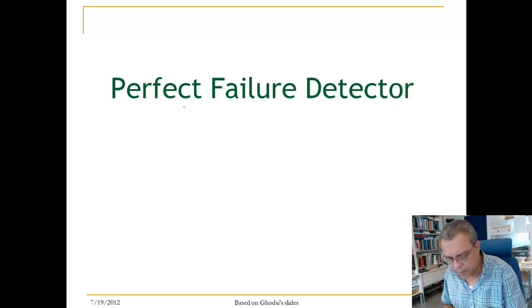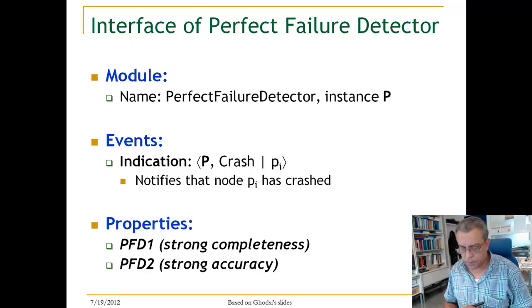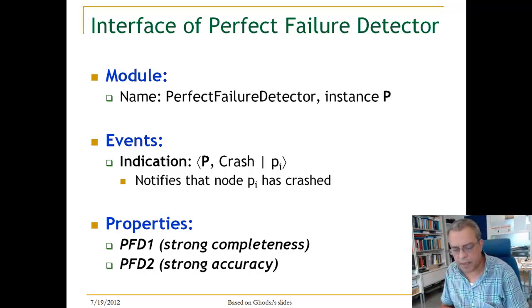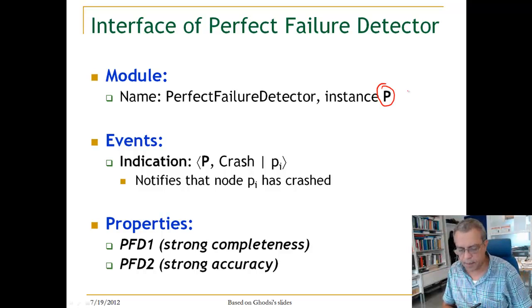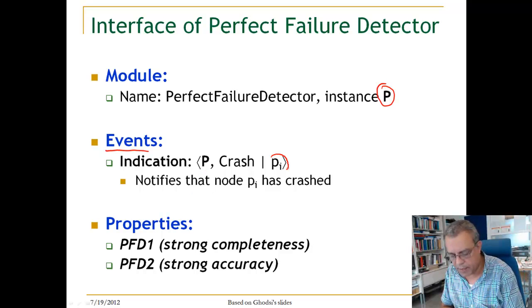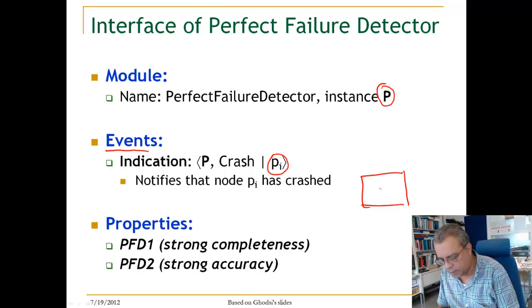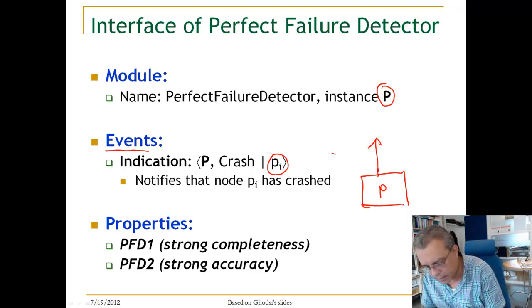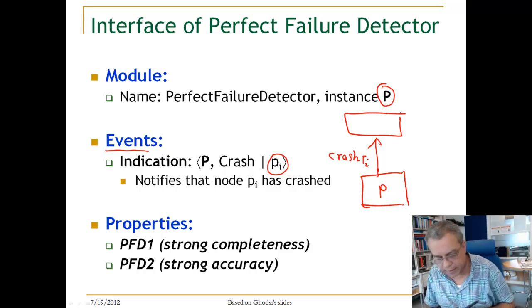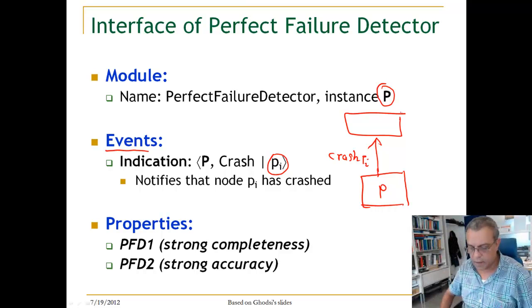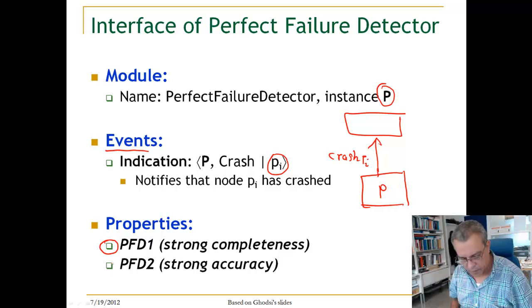We look at perfect failure detectors. The interface is instance P, which has only one event: whenever it detects that process PI has crashed, it outputs a crash event. This is our P failure detector — it outputs a crash event for PI to the upper layer. The two properties we have for perfect failure detectors are strong completeness and strong accuracy.